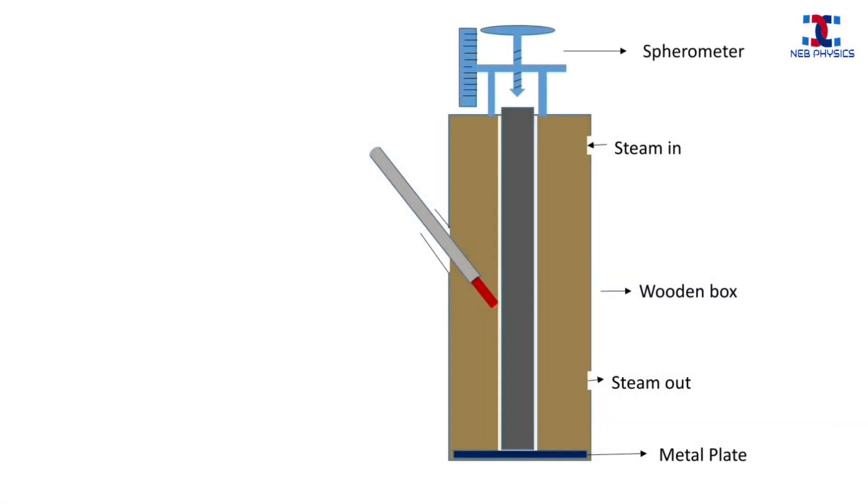Now the spherometer is adjusted as in figure, and the galvanometer circuit is connected to the spherometer and to the metal plate. The galvanometer circuit is connected in such a way that whenever the screw of spherometer comes in contact with the upper end of the metal rod, the circuit is completed and the galvanometer shows the deflection.